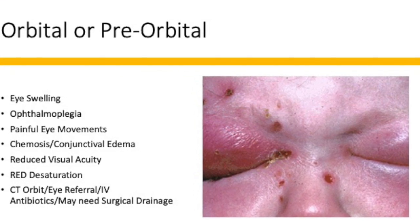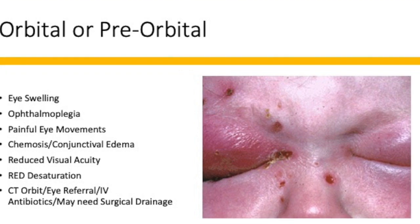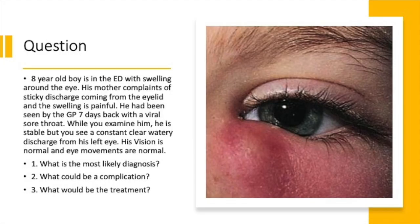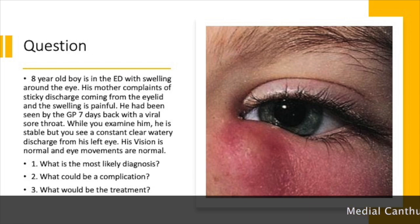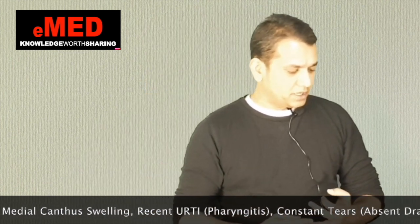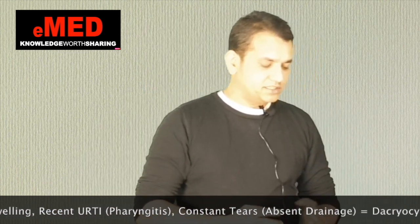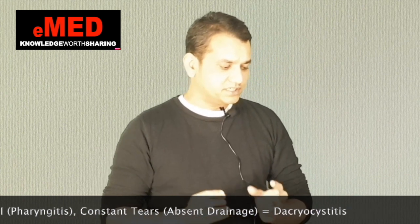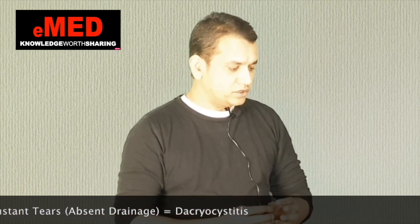Revisiting the 8-year-old child: the correct diagnosis is acute dacryocystitis. The swelling is at the medial canthus of the eye where the lacrimal sac sits. He had a recent upper respiratory tract infection — likely a strep sore throat. The child is stable and the inflammation is restricted to one area of the eyelid, so it is not orbital cellulitis.